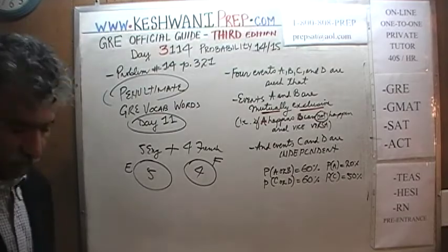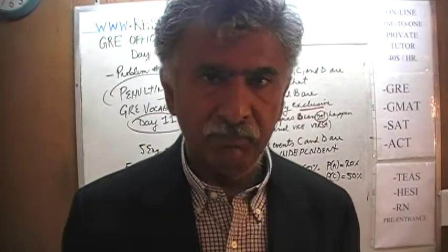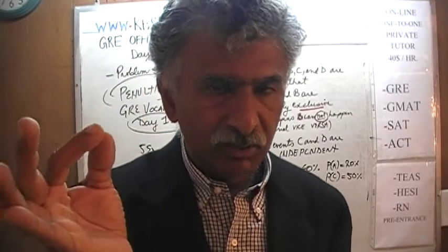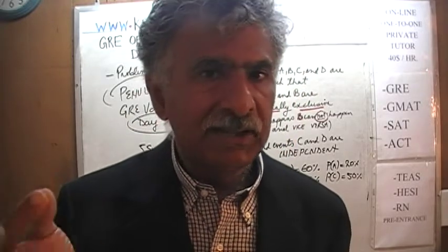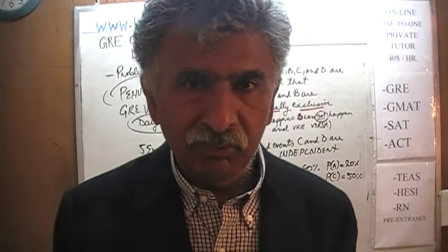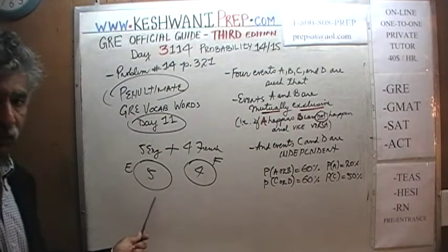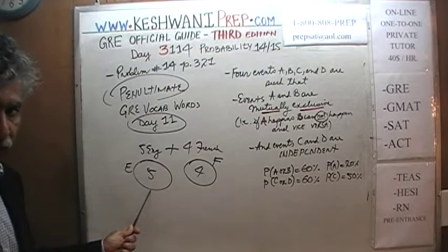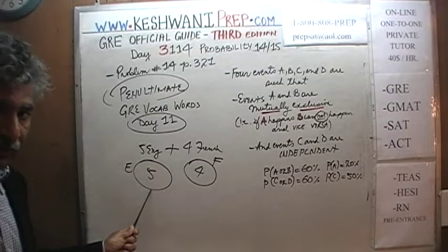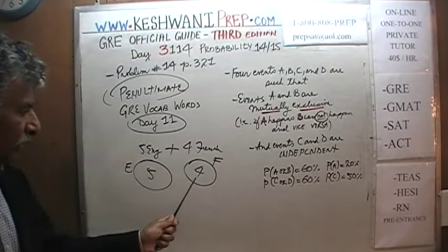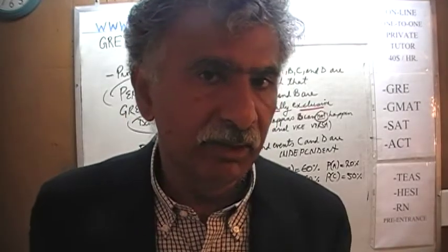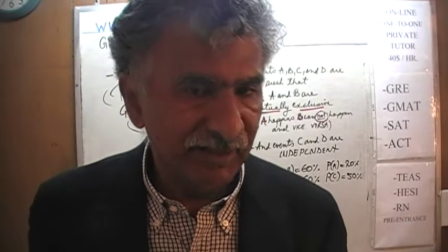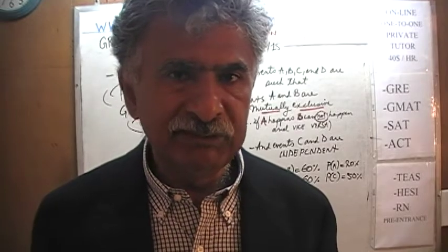Among these 9 people, if you pick one person at random and that person tells you they are taking English, then the odds that person is also taking French is a big fat zero. If event E took place, it rules out the possibility of F. These two events are mutually exclusive — mutual exclusivity means if one happens, the other cannot.